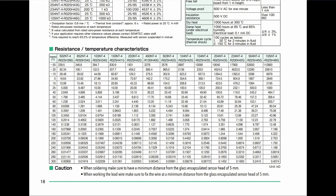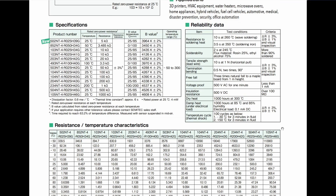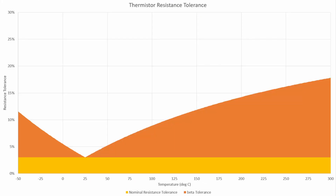In this case, we have the full table of data we need to define the thermistor in our firmware, so we can go ahead and look at the next step, which is the resistance tolerance calculation. In order to understand the resistance tolerance, we need three values: the first is the rated temperature, which in this case is 25 degrees Celsius; the rated resistance tolerance at that temperature, which is plus or minus 3%; and then the rated beta value, which in this case is plus or minus 2%.